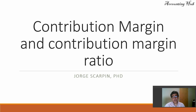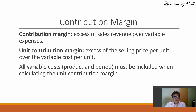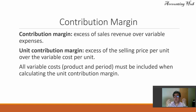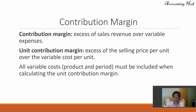Contribution margin is the excess of sales over variable expenses. Textbooks may call them variable expenses or variable costs. We combine production costs and operating expenses — we don't care anymore if we are talking about product costs, period costs, or operating expenses. Our focus is fixed versus variable costs. Contribution margin is the excess of sales revenue over variable expenses.